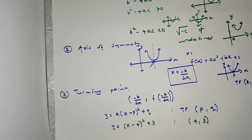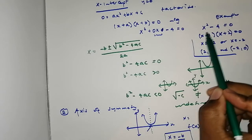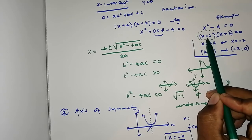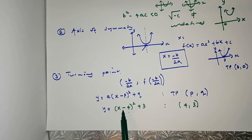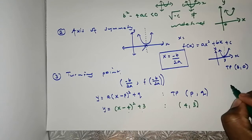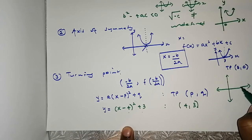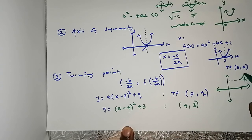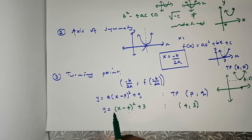Some people might be confused about why the turning point of y = (x − 4)² + 3 is (4, 3) and not (−4, 3). Looking at the equation, x = 4, not negative 4 — so the turning point is (4, 3). Plotting this, with x = 4 and y = 3, and since a = 1 is positive, your parabola opens upward and turns at that point.